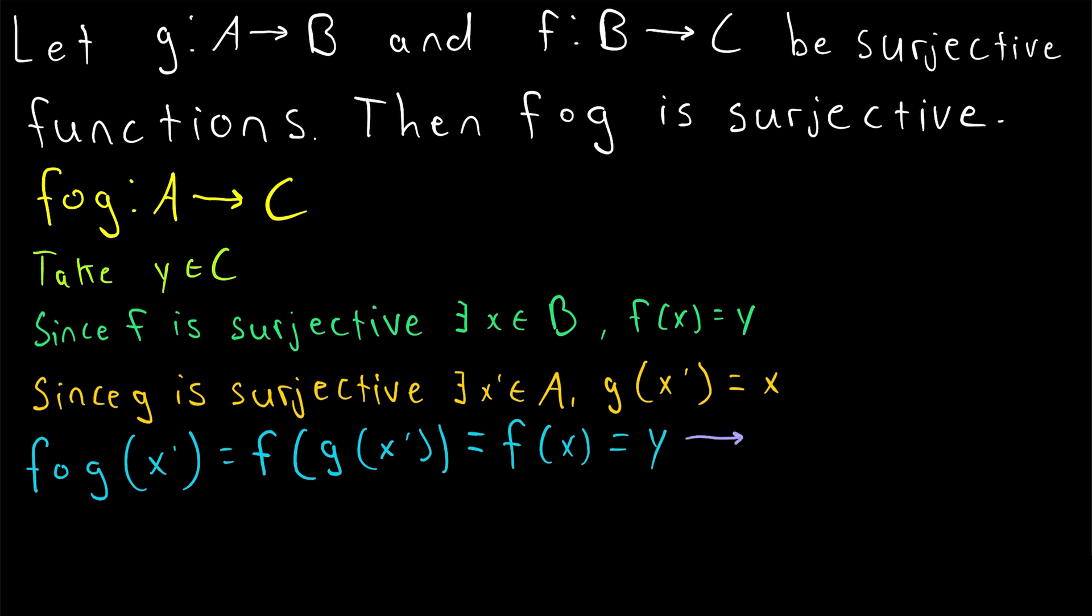Thus, cutting out all the middle equalities to just look at what we care about, we see that F of G of X prime is equal to Y. We've just shown, basically by working backwards from F to G, that given any element Y in the codomain of F of G, we can find this element X prime in the domain that maps to Y. Thus, by definition of surjective, we've just shown that the composition F of G, which maps A to C, is surjective, which followed easily from our original assumption that the functions F and G are surjective.